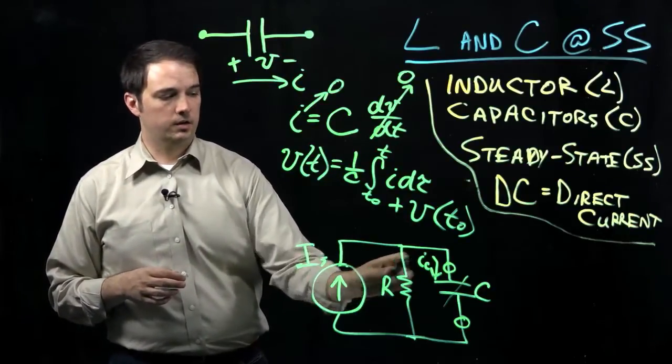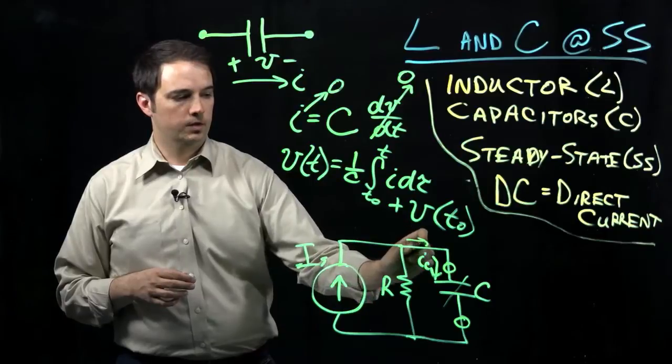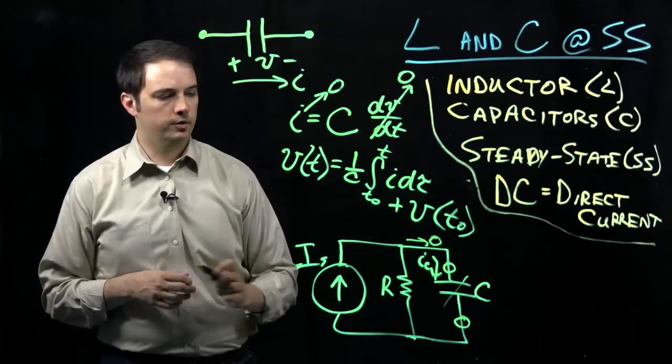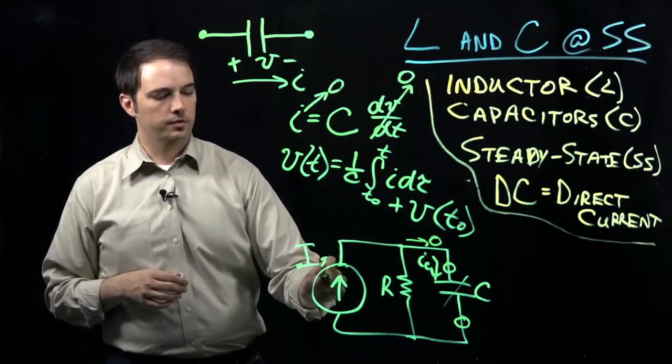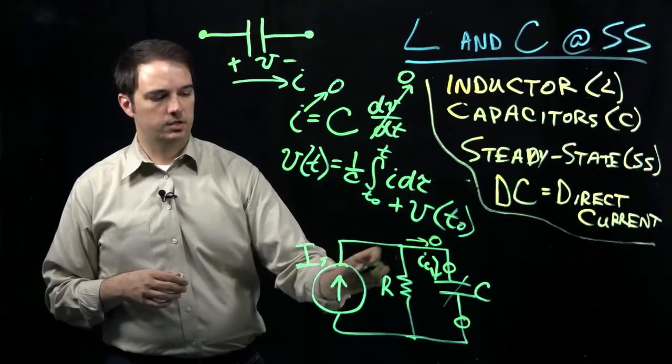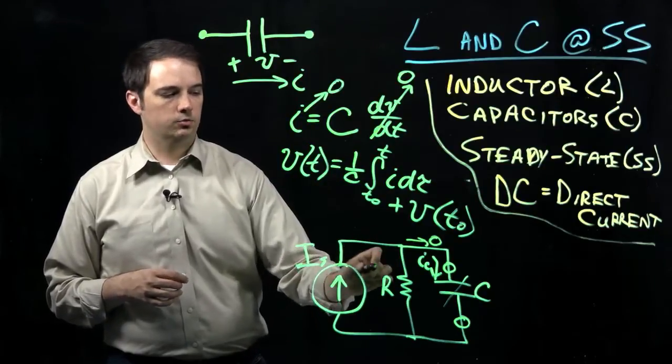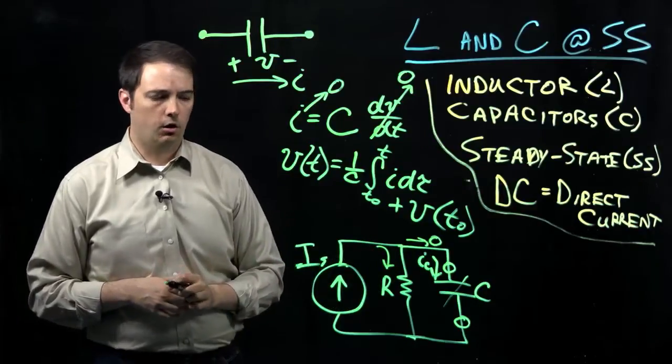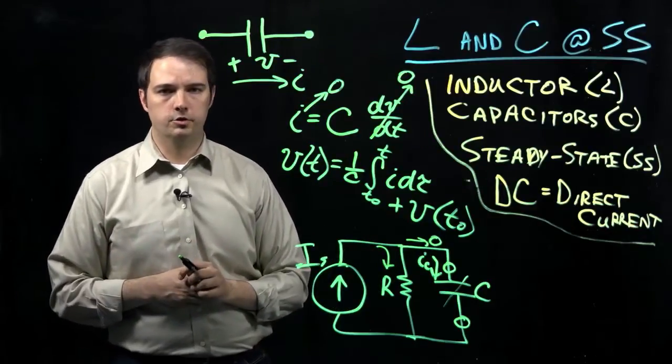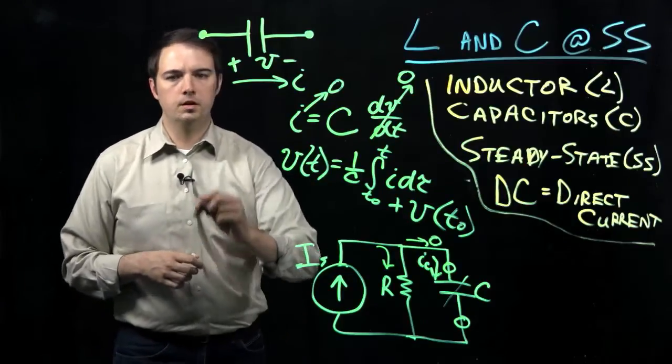And so then, in that case, if IC had to be equal to zero, so no current flow down that branch of the circuit, then I know that once I've reached steady state, all the current from this current source IS would then be traveling down through my resistor R, and from that I could use Ohm's Law to calculate voltage and such.